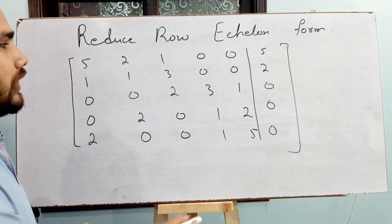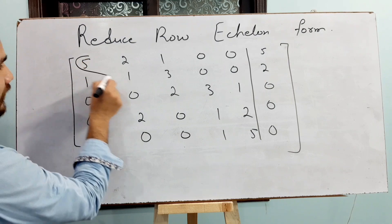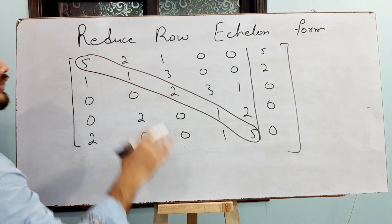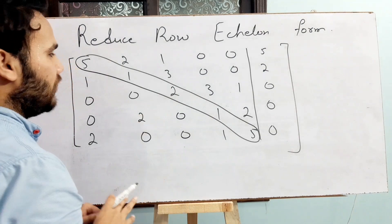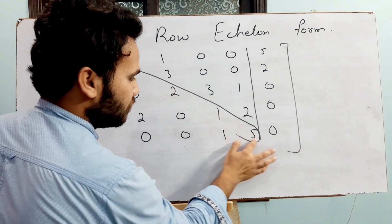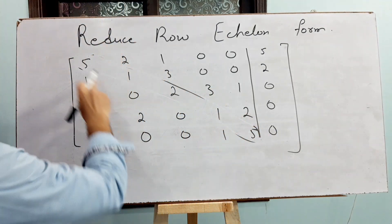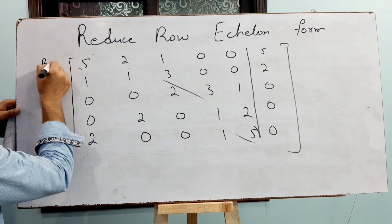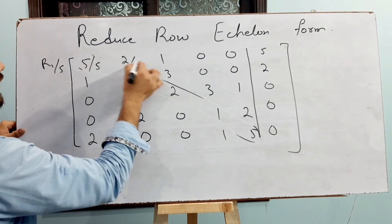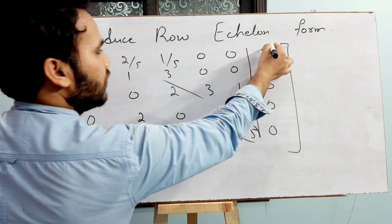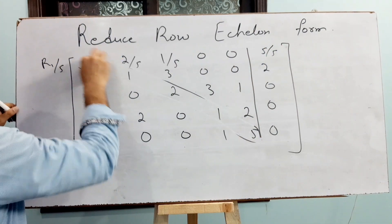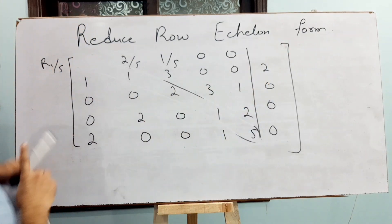In reduced row echelon form our target is to make the diagonal entries equal to 1 and rest of all entries should be 0. This is our target. So I am using basic elementary row operations. From first, if I divide R1 by 5, then this will be 1, 2 by 5, 1 by 5, 0, 0 and divide by 5.